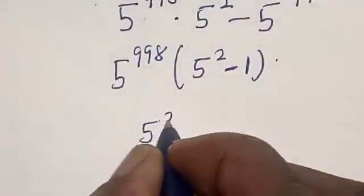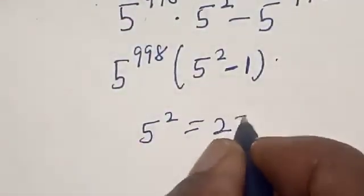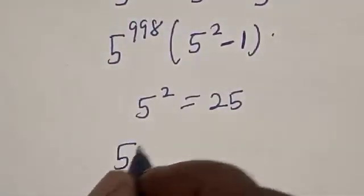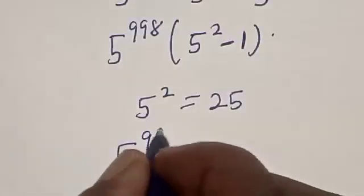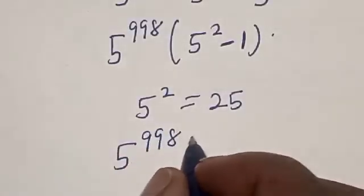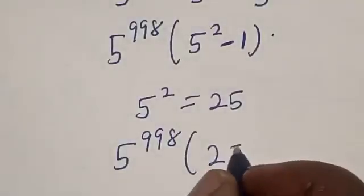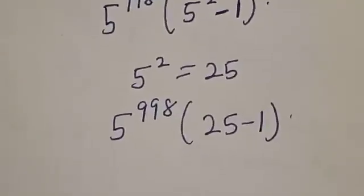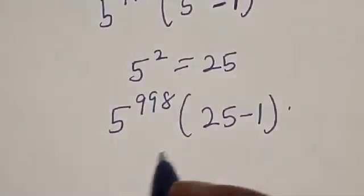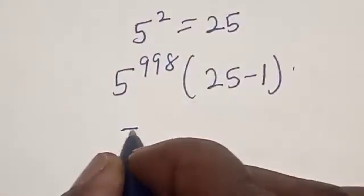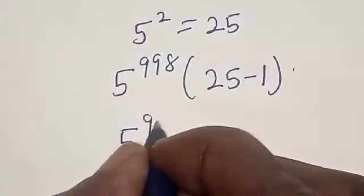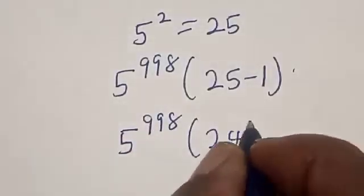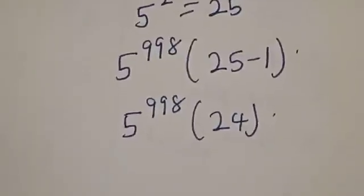Now 5 squared is equal to 25. We have 5 raised to power 998 into 25 minus 1. Note that 25 minus 1 is equal to 24. We have 5 raised to power 998 into 24.